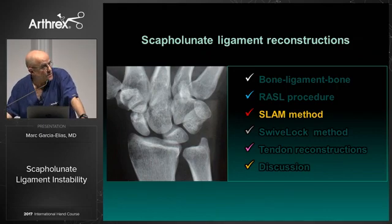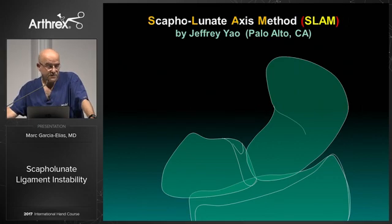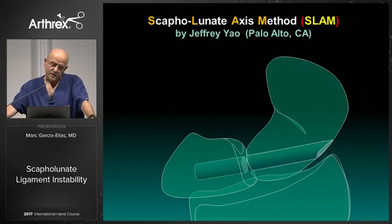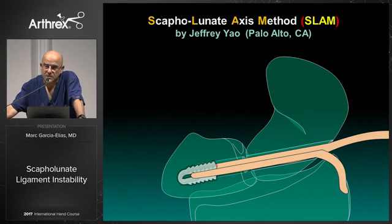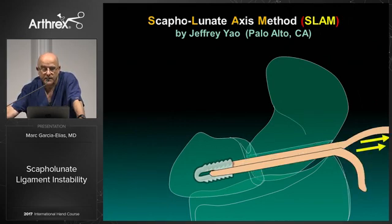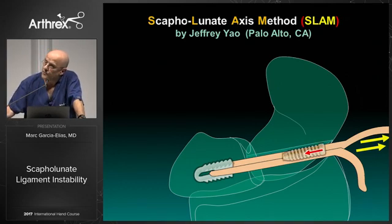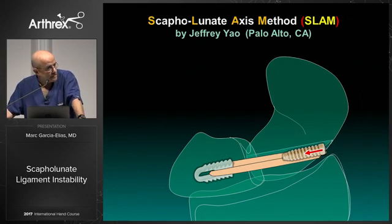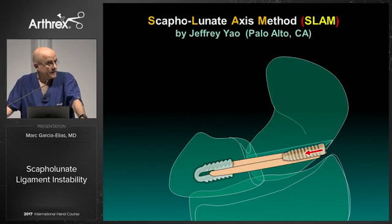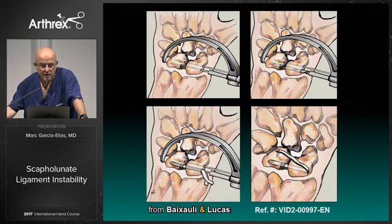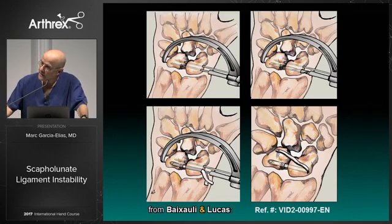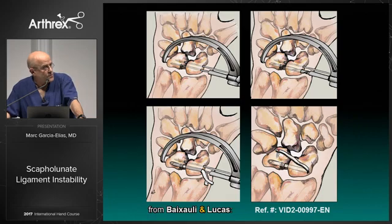Then the SLAM method. The SLAM method was described in this house — Jeffrey Yao from Palo Alto at Stanford thought of using a tunnel across the scaphoid and lunate. He uses a graft anchor with a tendon graft placed in that tunnel, reduces the instability, and an interference screw provides stability. We haven't heard about long-term results yet, but so far the cases he's been presenting are quite substantial. Similarly, Basholi and Lucas from Valencia use the same concept, reconstructing the dorsal scaphoid-lunate ligament with a tendon remnant.